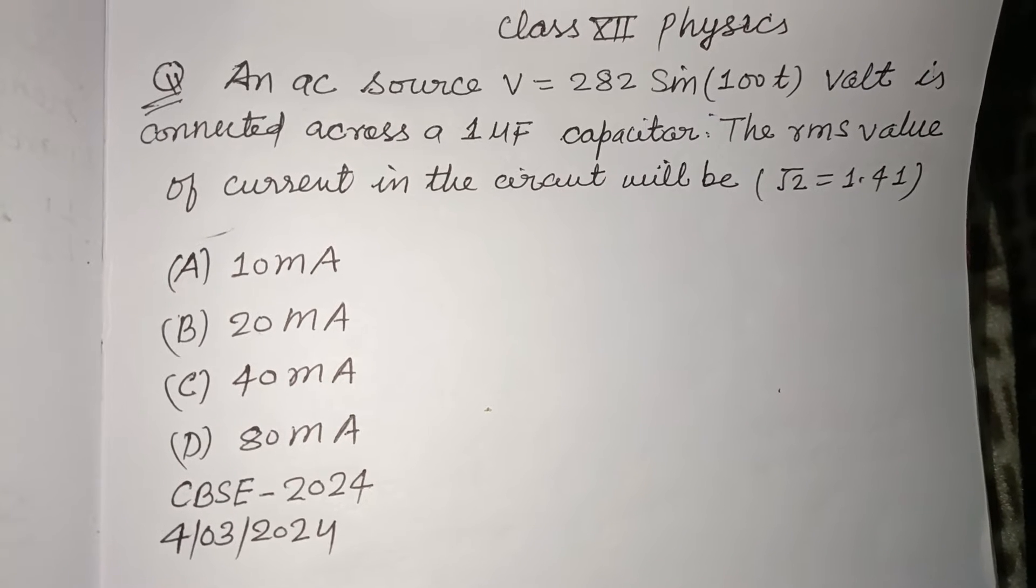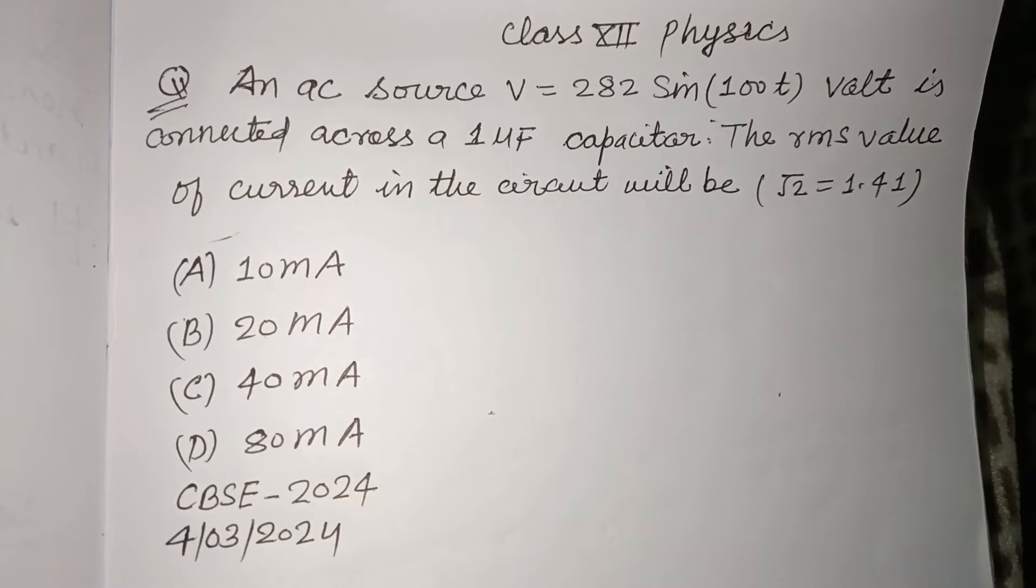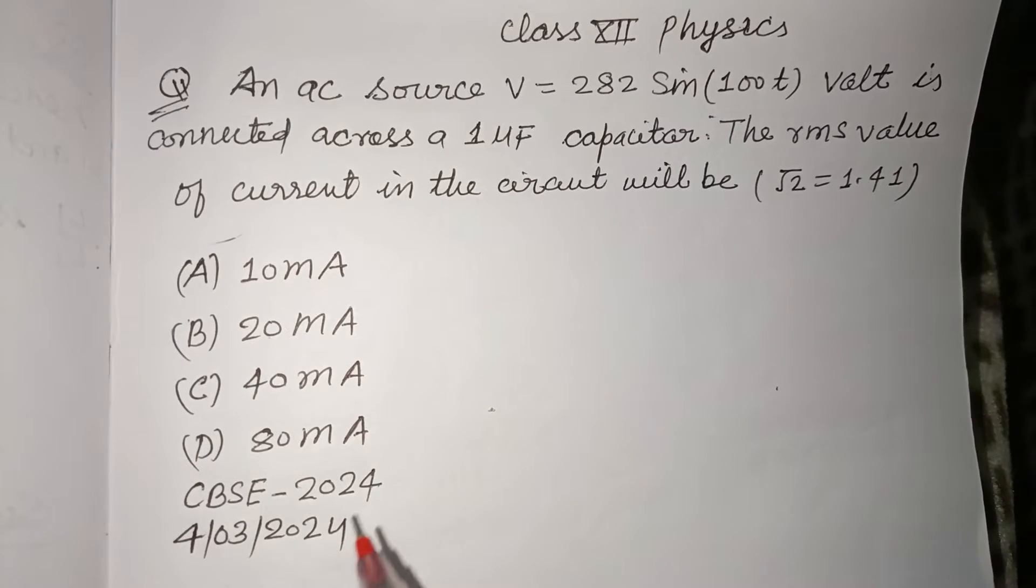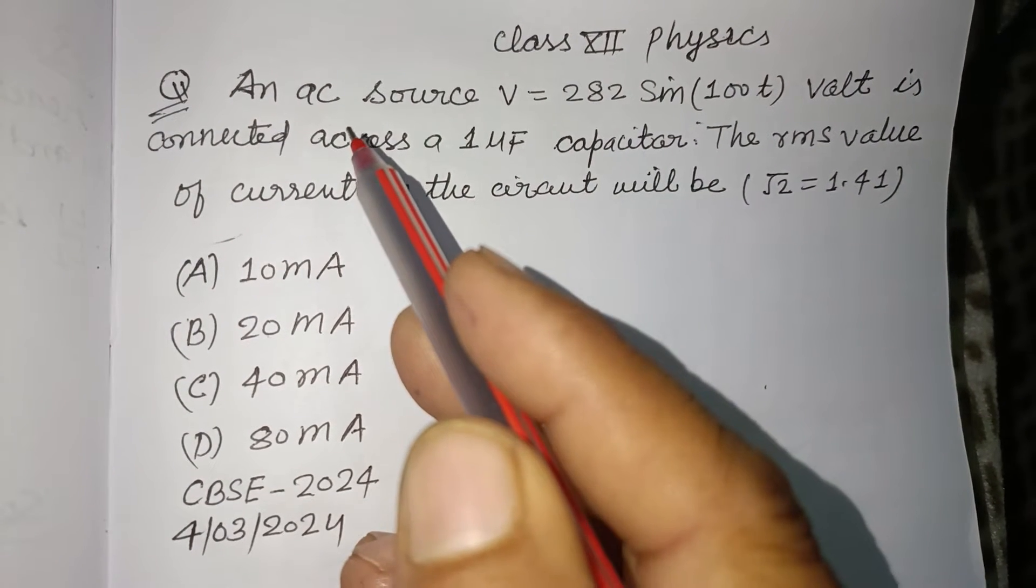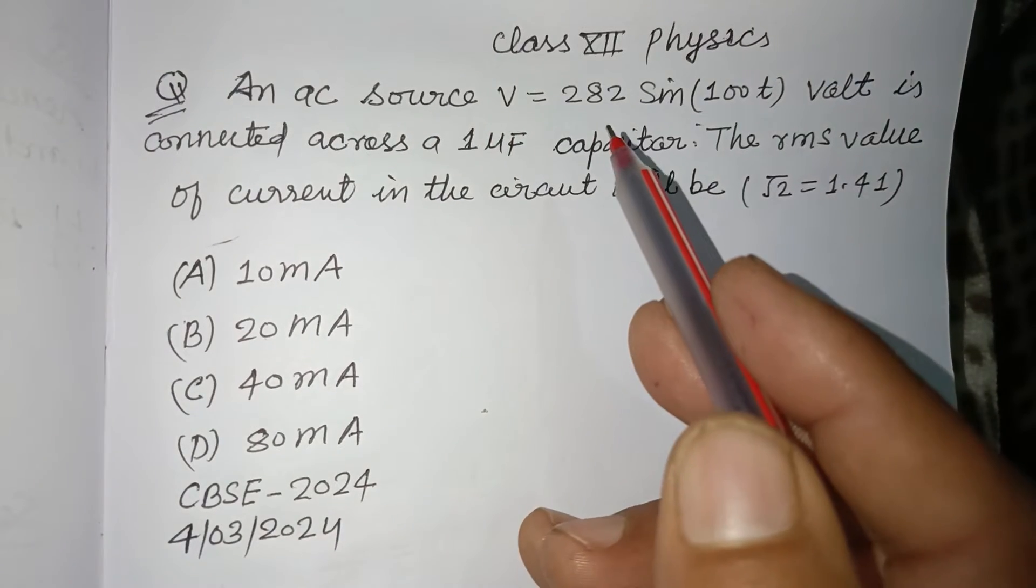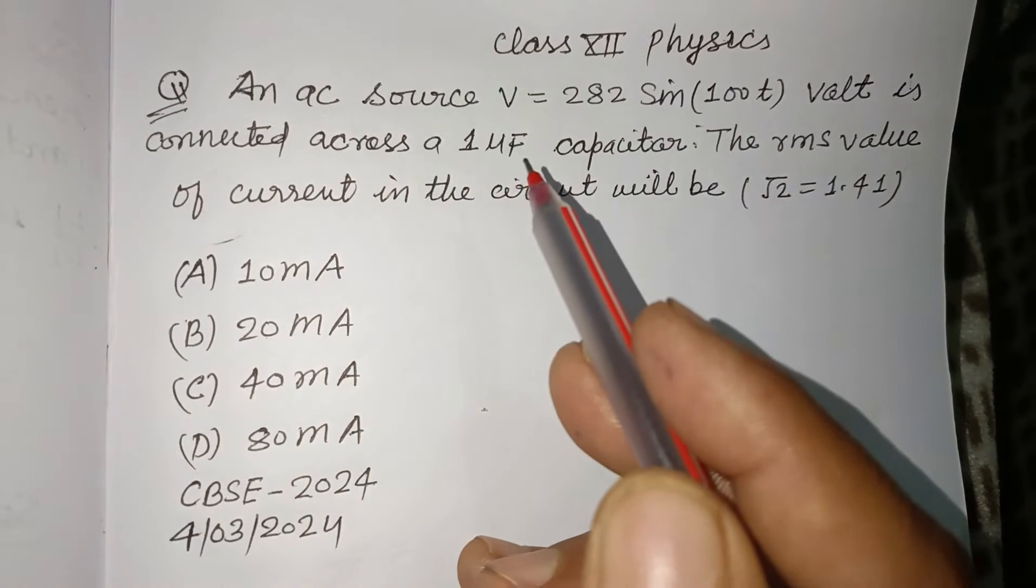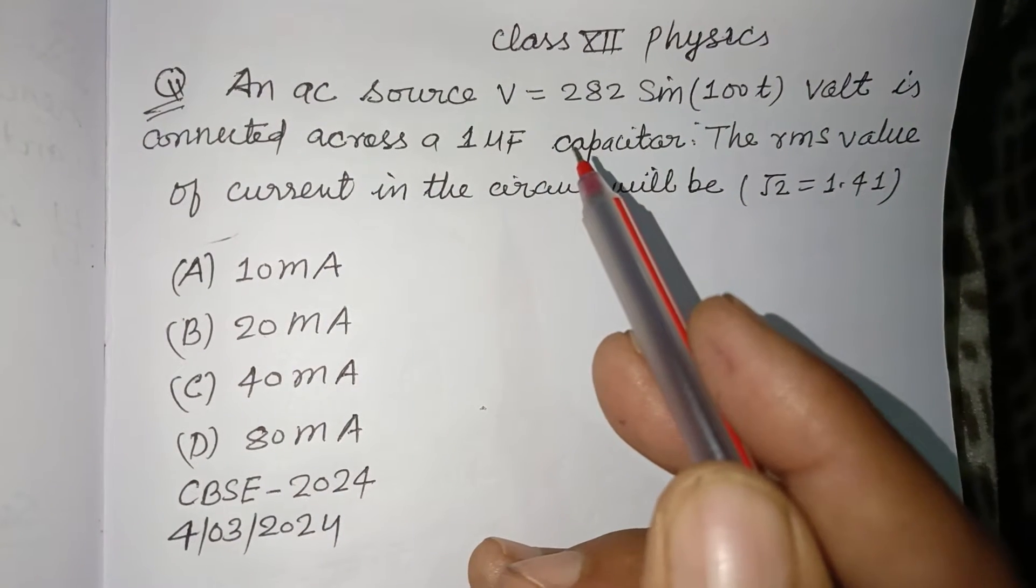Hello viewers, warm welcome to this YouTube channel. This is a question from CBSE board exam 2024 for Class 12 Physics. An AC source V = 282 sin(100t) volts is connected across a 1 microfarad capacitor.